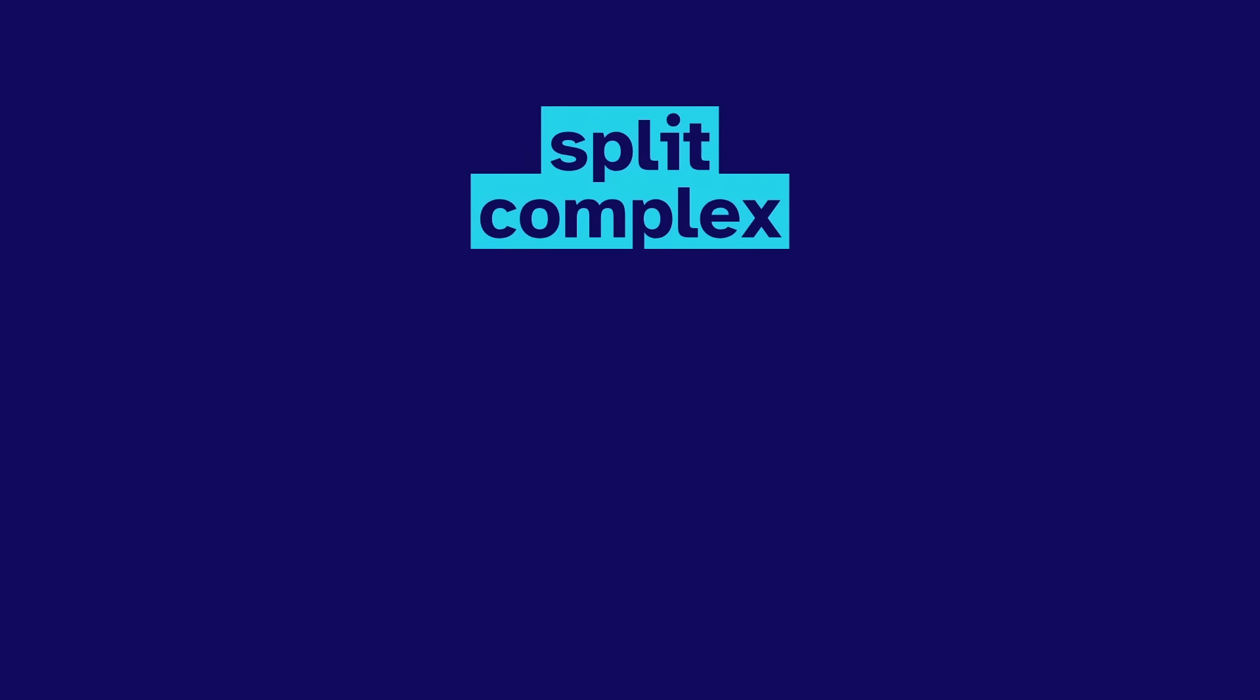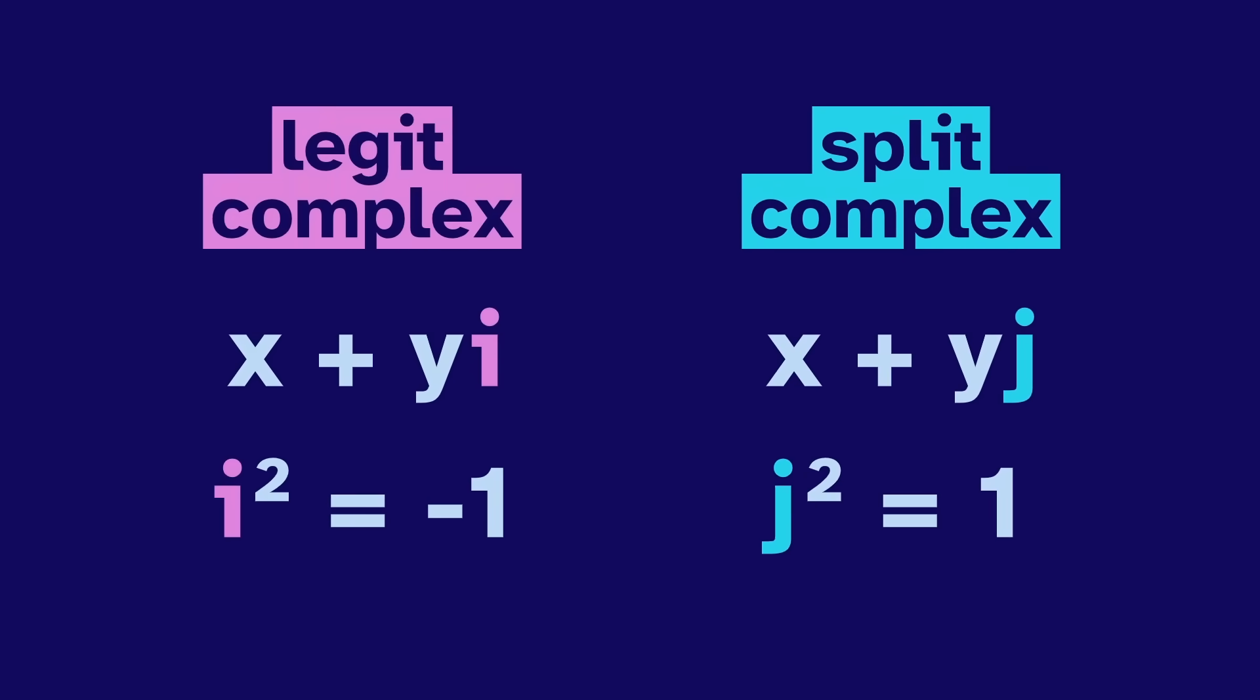The split complex are defined as x plus y j, where x and y are real and j squares to 1. This makes the split complex different from the legit complex, where i squares to negative 1.